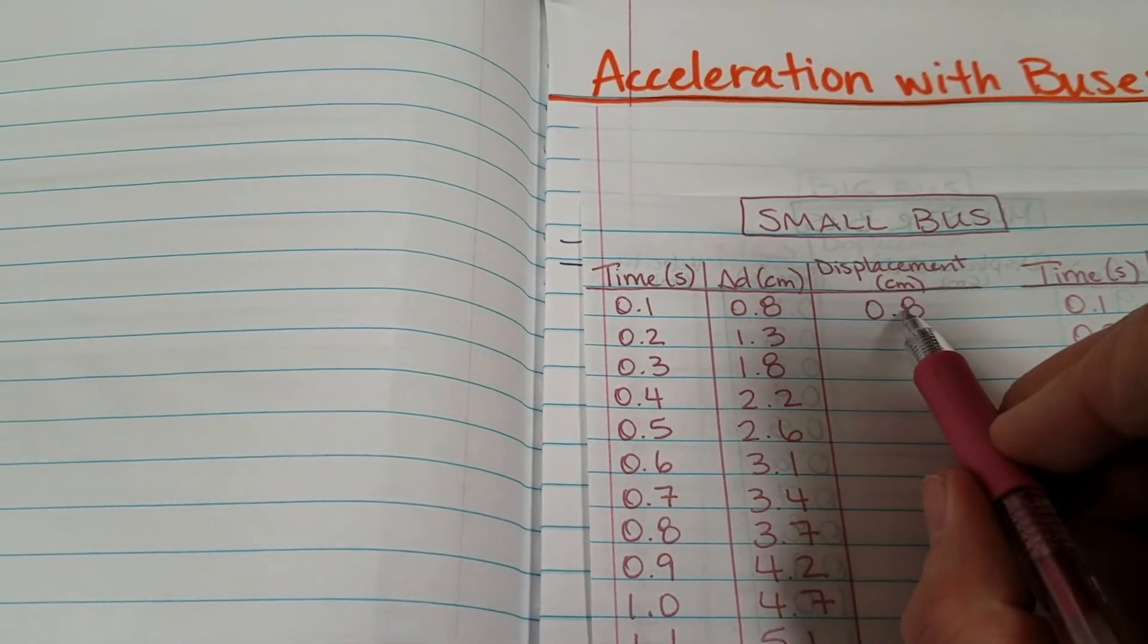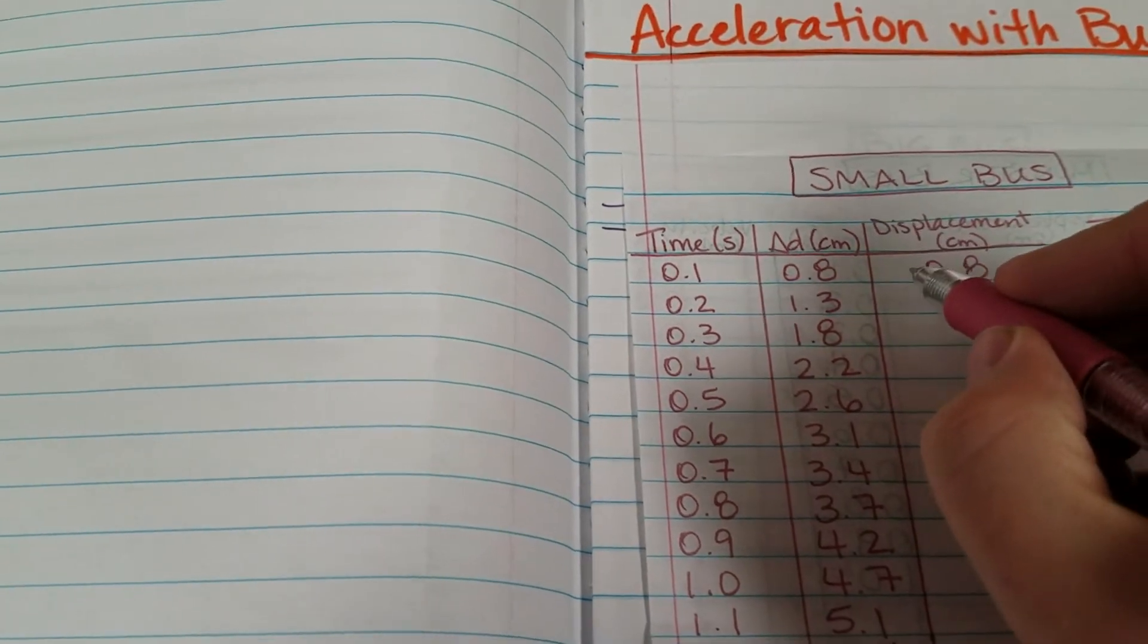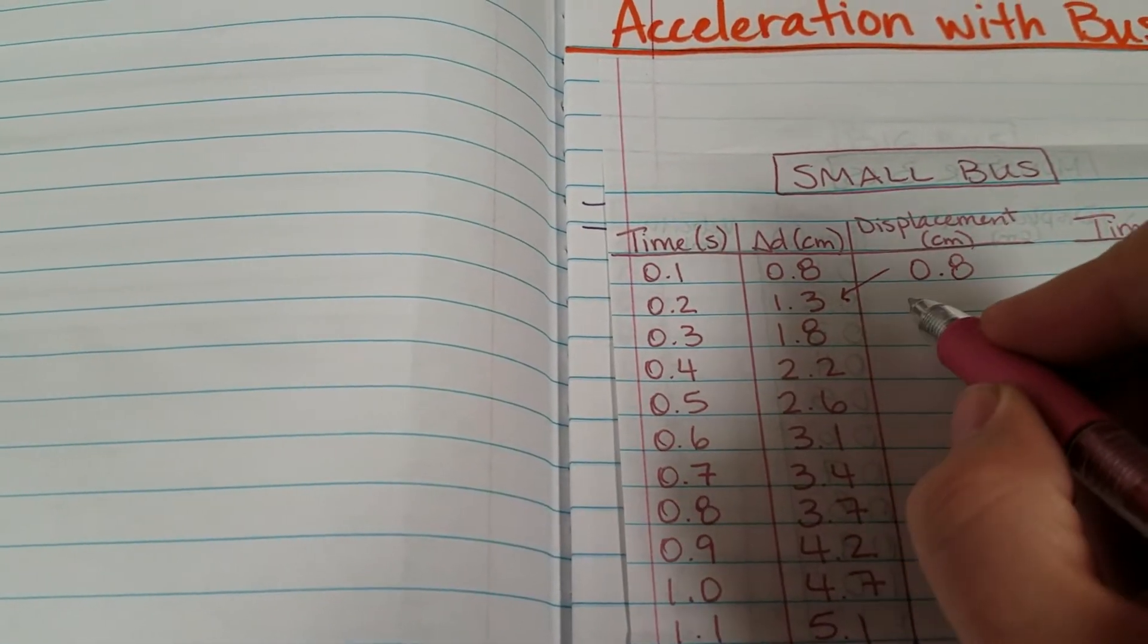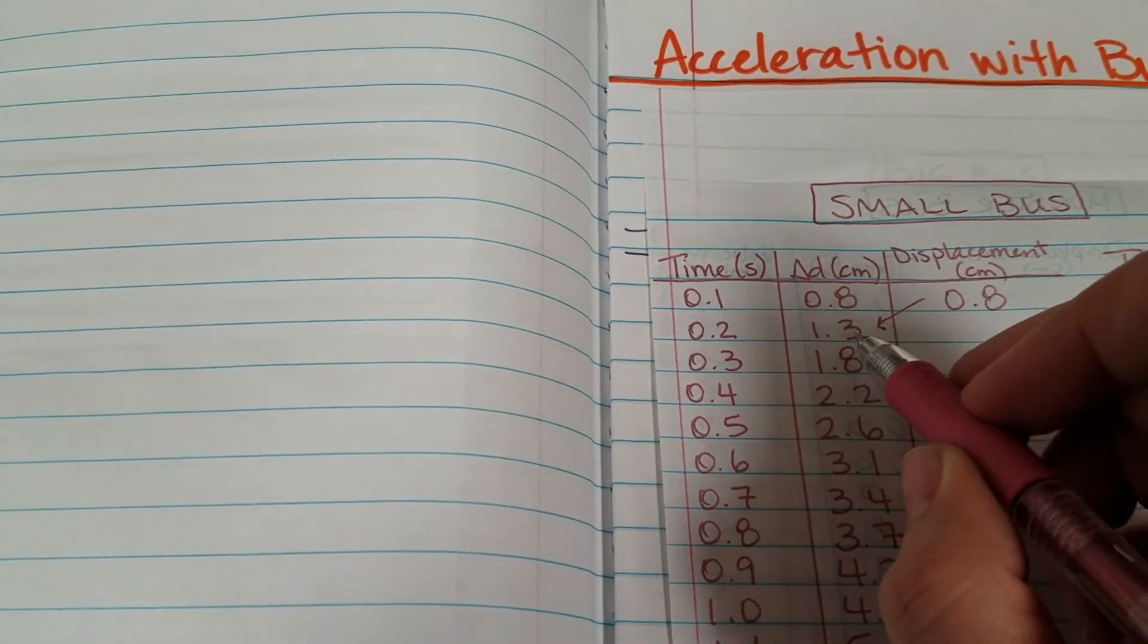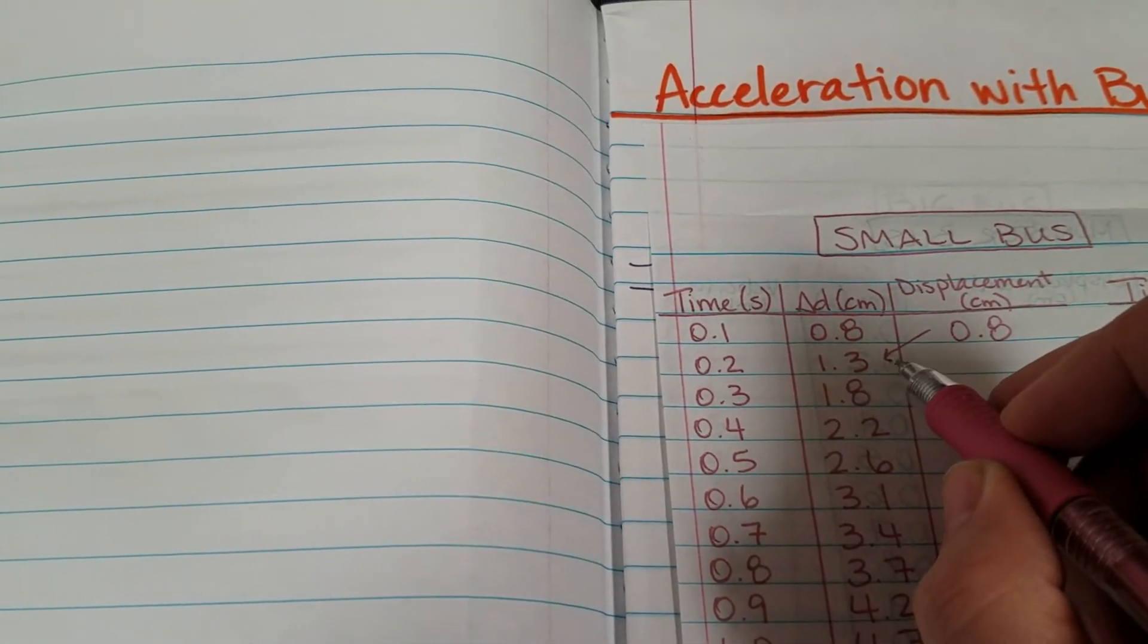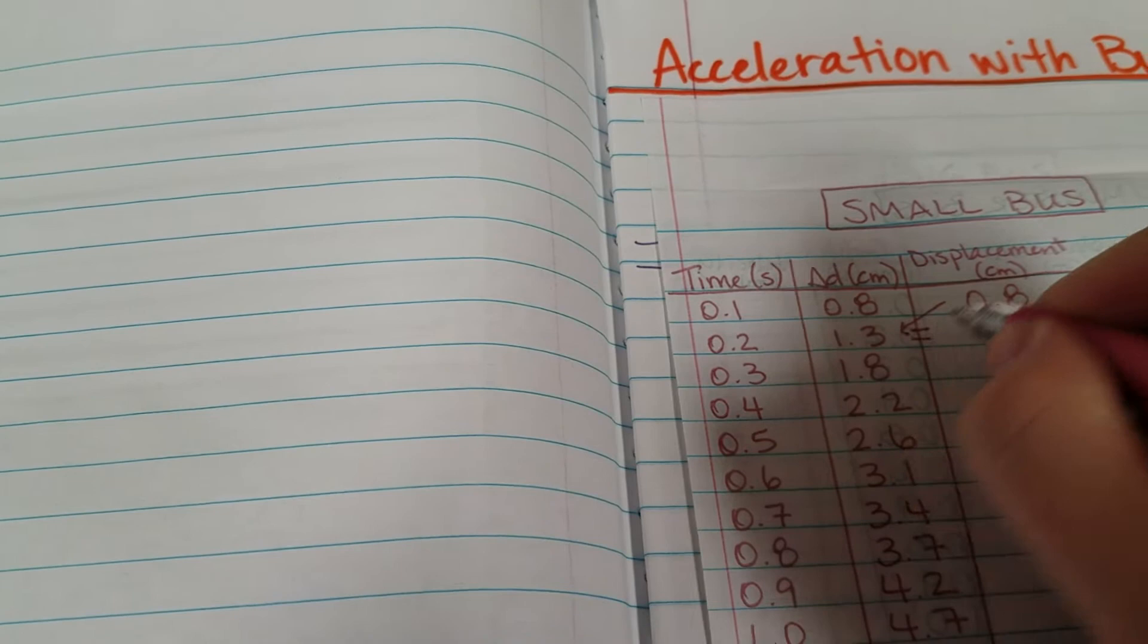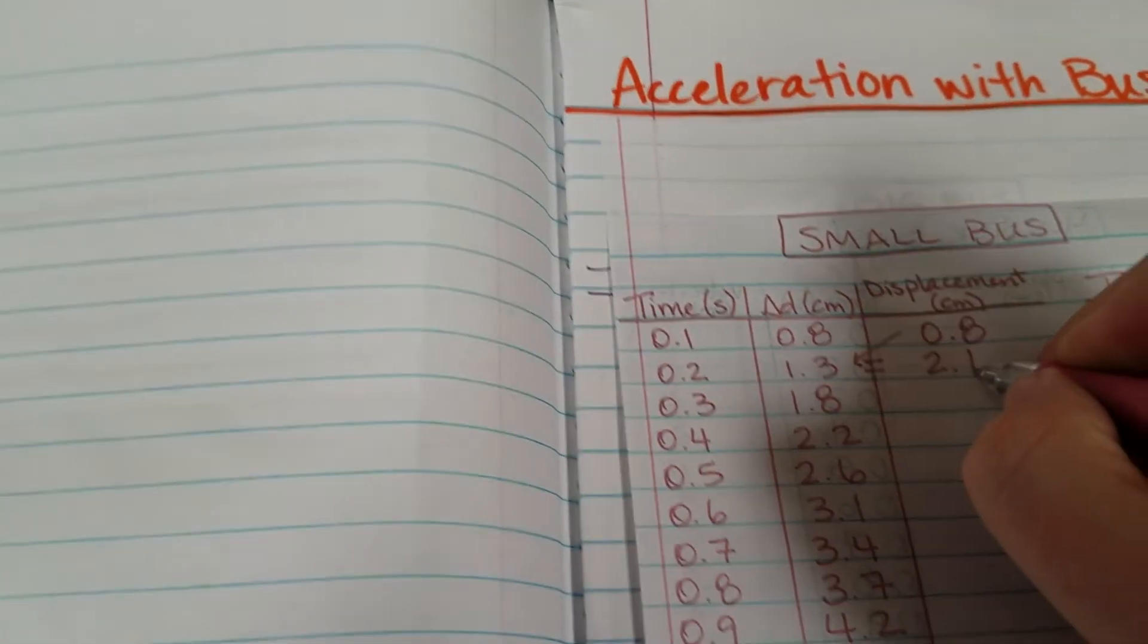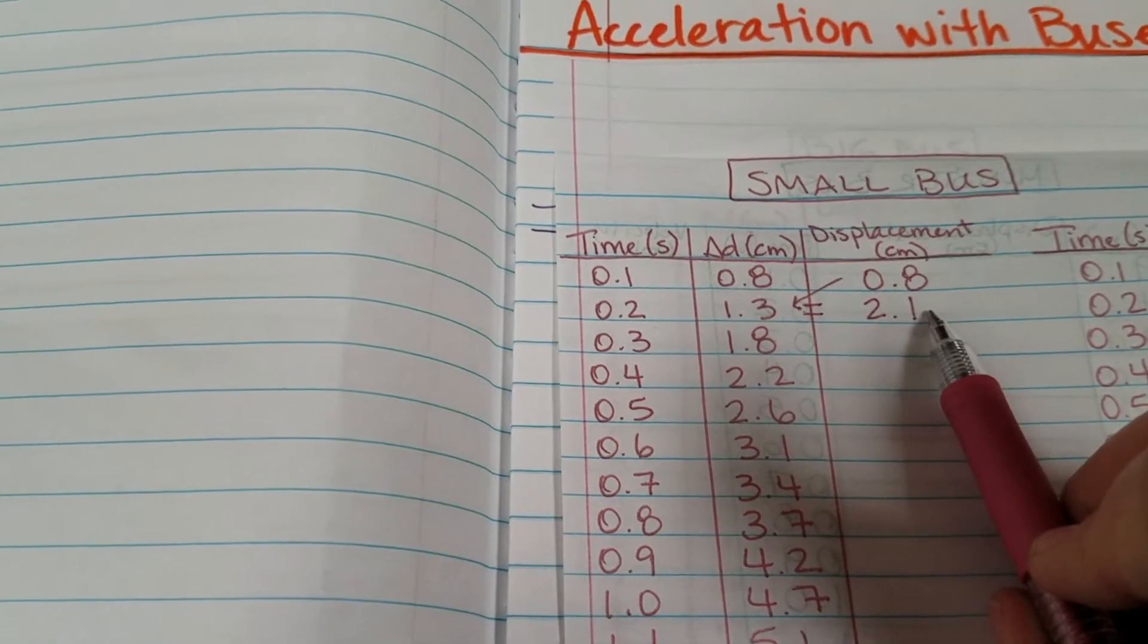Now I'm going to take this number plus the next one. I'm going to add those together. 0.8 plus 1.3 is going to give me 2.1 for my total displacement here.